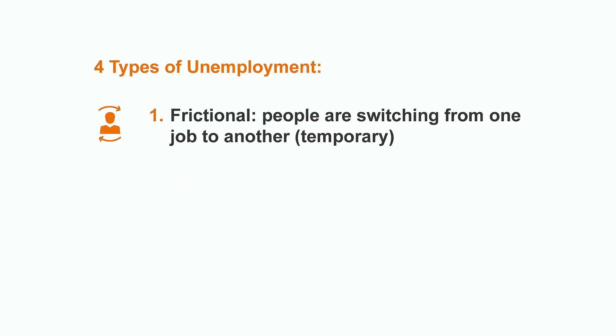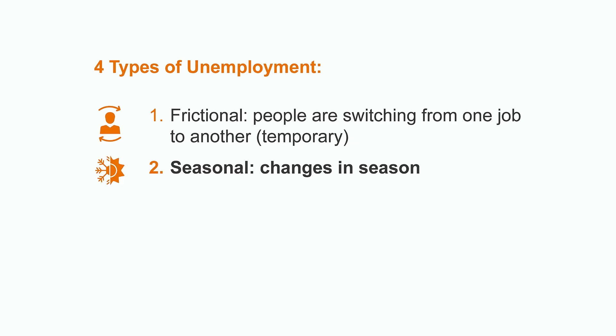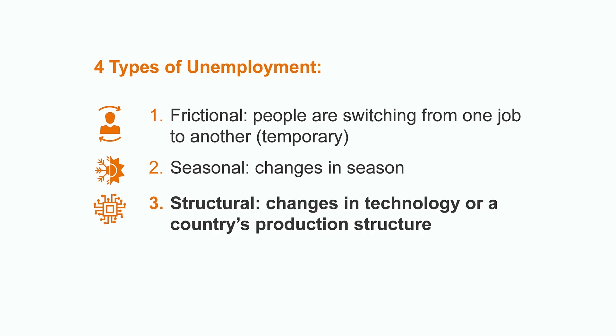Frictional unemployment occurs when people are switching from one job to another, and is supposed to be only temporary. Seasonal unemployment is associated, as its name says, with changes in season which lead to people running out of jobs, such as skiing instructors or ice cream vendors. Structural unemployment is more difficult to deal with, since it has to do with changes in technology or a country's production structure.